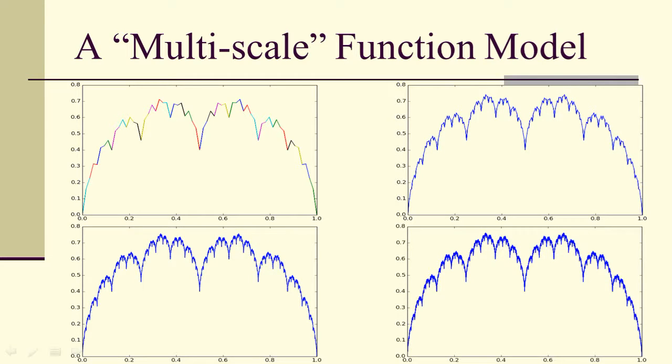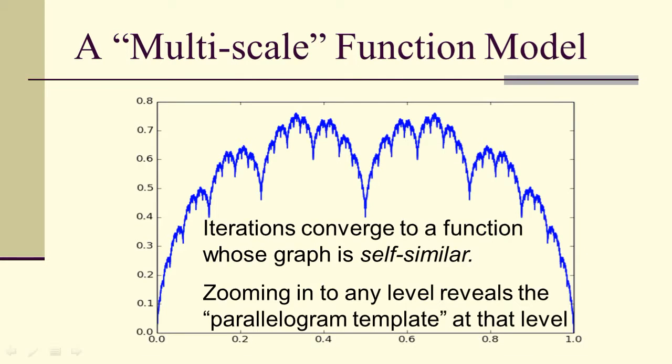We do this keeping these vertical segments vertical. That's what guarantees it's a function, vertical line test. Now we have eight pieces, and we're just going to continue doing this. What we see emerging is a fractal interpolation function. We think of this process as going on indefinitely, and it converges to a function whose graph is self-similar. Self-similar means, if you zoom in at any point or any region, you'll see the parallelogram template repeated again at that level. That means there's infinite detail at all scales.